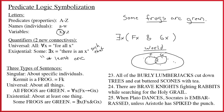Existentials are called existentials because they imply the existence of something. When you say 'all frogs are green,' from the perspective of logic, you don't necessarily imply the existence of anything — you're just saying if there's a frog, then it's green, without asserting that frogs exist. Existentials assert existence, which is why they carry that name.